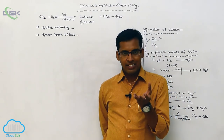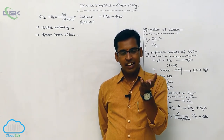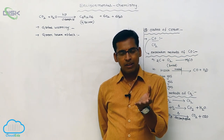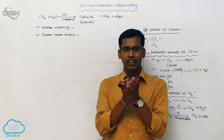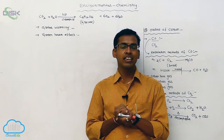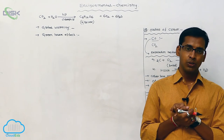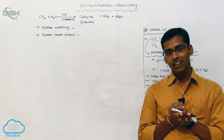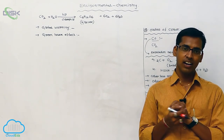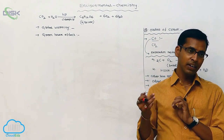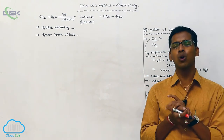Whenever the percentage of carbon dioxide increases in the environment, the atmosphere is heated — meaning atmospheric temperature increases. This increase in atmospheric temperature is due to organic substances like chlorofluorocarbons (CFCs), hydrocarbons, or incomplete combustion of hydrocarbons. These are the reasons for causing global warming.